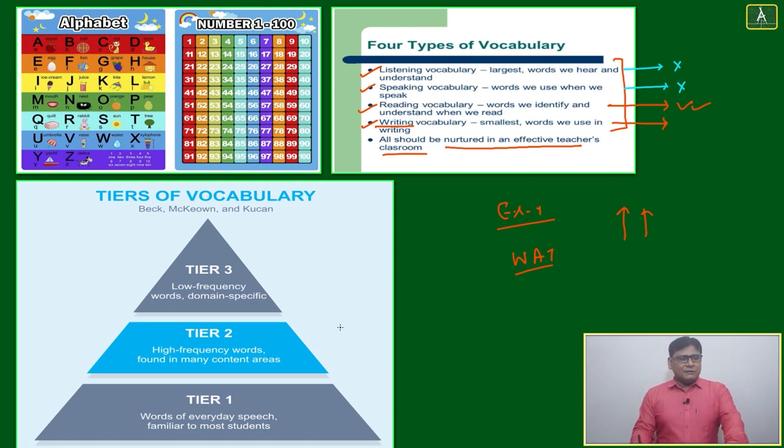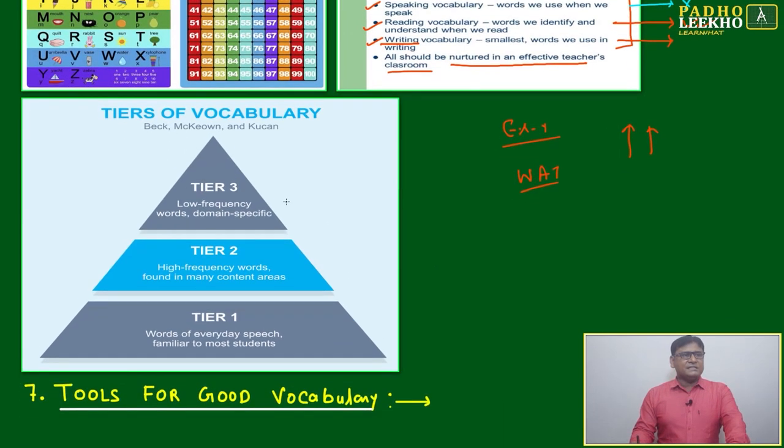Afterwards, another classification is there. Another way we can say it is Tier 1, Tier 2, Tier 3. Tier 1 is words of everyday speech - very common words. Tier 2 is high frequency words. Here we have to give focus, for example, 'purpose.' Tier 3 again - it is not much usage for exam point of view, but for learning point of view it should be.